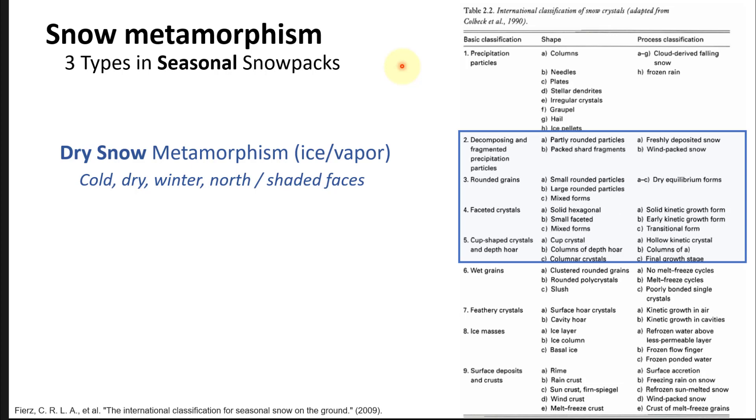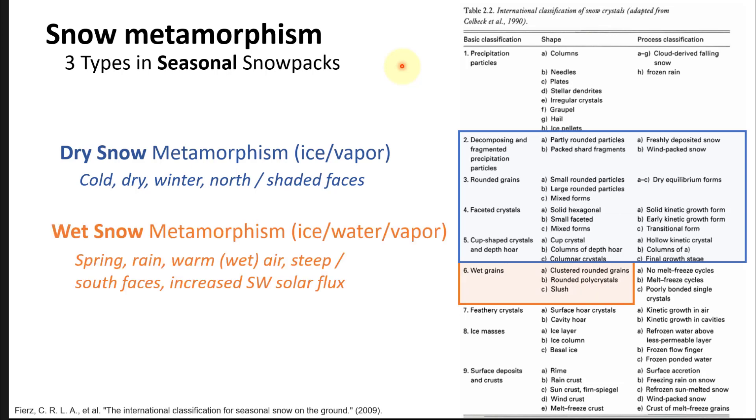Once you integrate an additional phase of water, the liquid water, you have different types of grains and metamorphism, specifically wet snow metamorphism. Now you have solid ice, liquid water, and gas vapor all in the system interacting. That may not seem like a big change, but it's significant because it changes everything from heat flow to vapor pressure gradients to the types of bonding and sintering between grains.